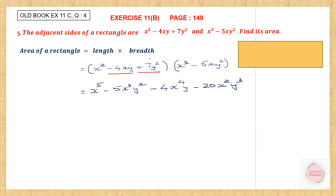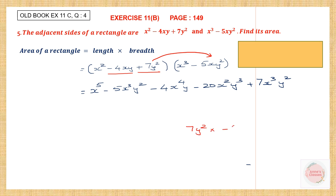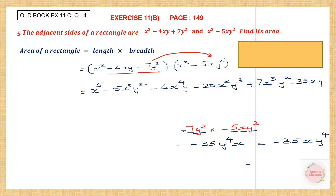Now we take plus 7y squared and multiply with x cubed. The number is 7, the sign is plus, giving plus 7x cubed y squared. Then we multiply 7y squared with minus 5xy squared: plus into minus is minus, 7 fives are 35, y squared and y squared is y to the power of 4, and we have an x. So that is minus 35xy to the power of 4.